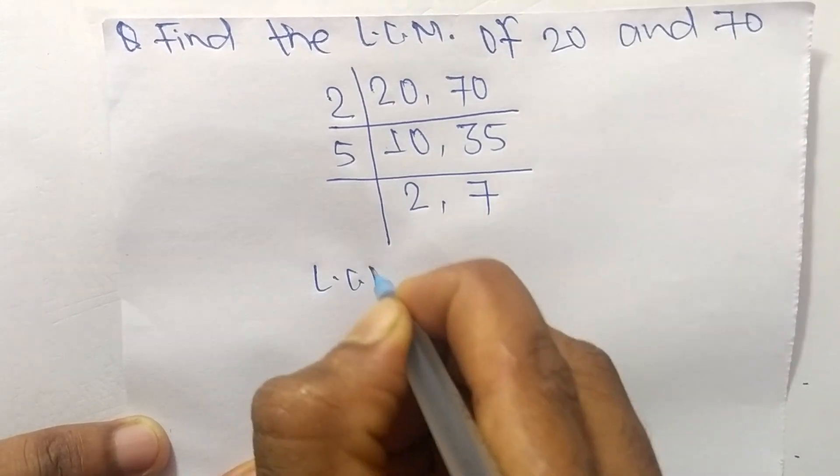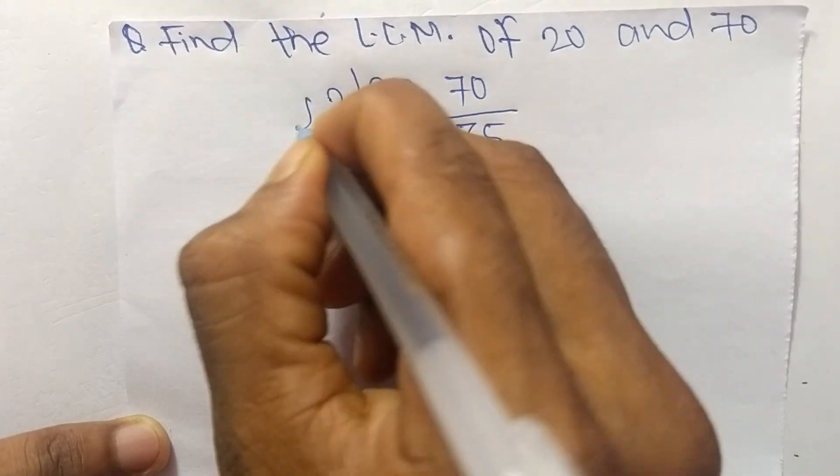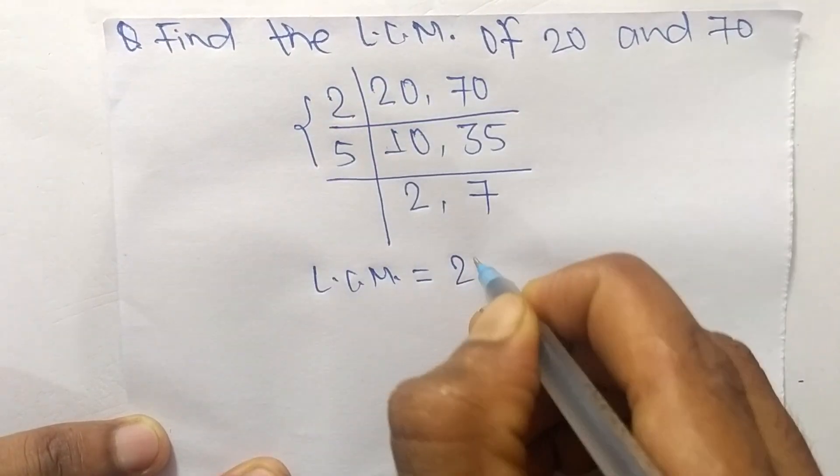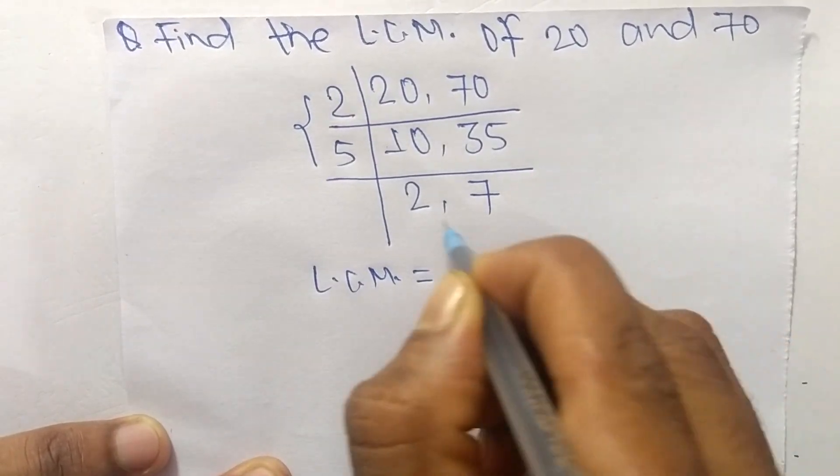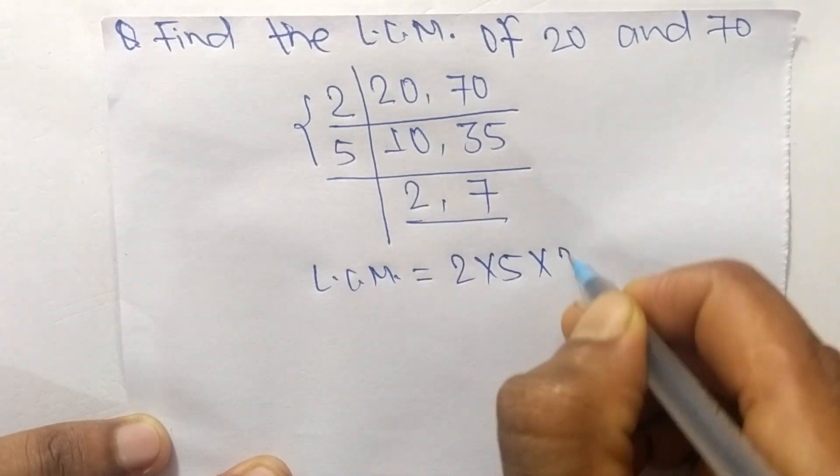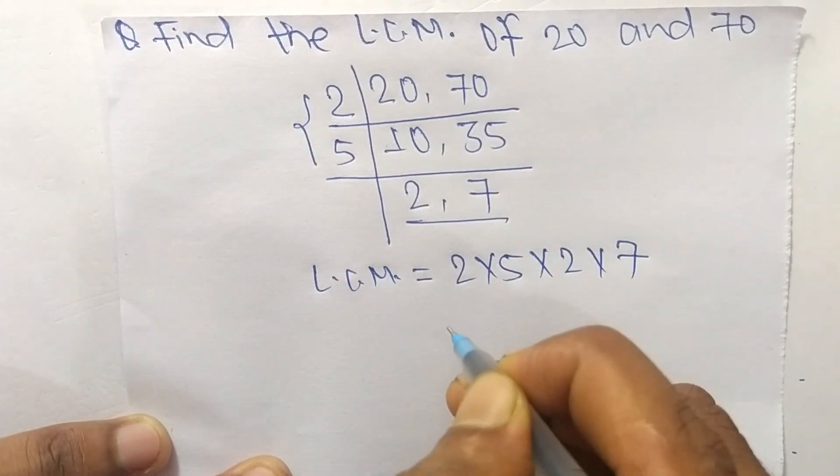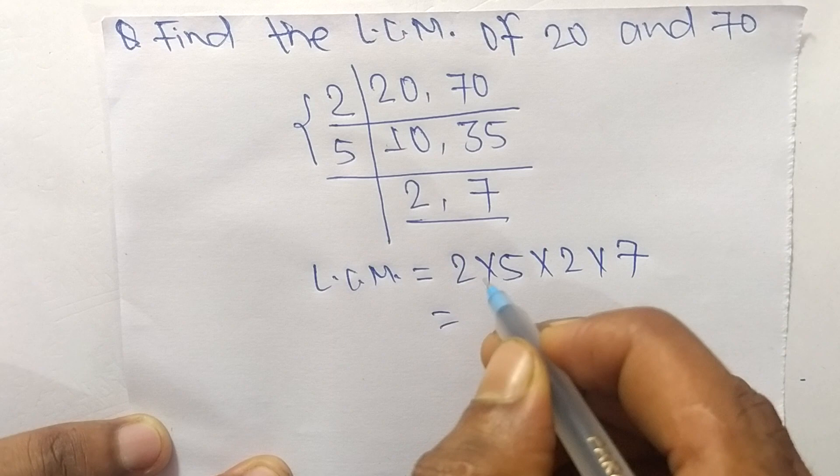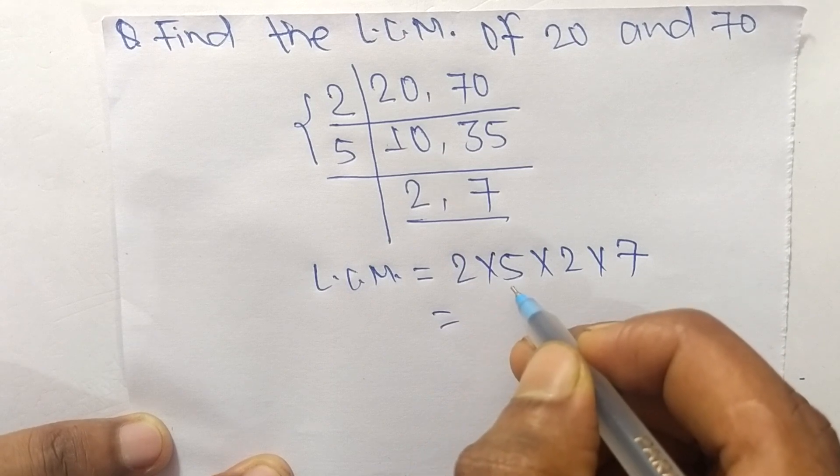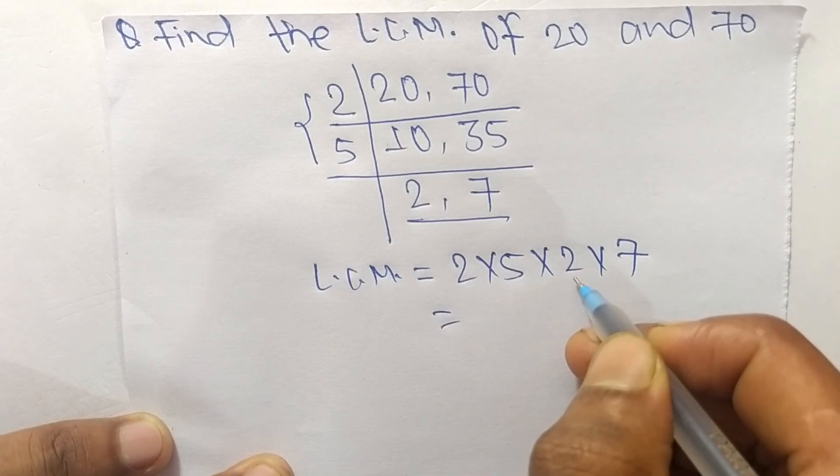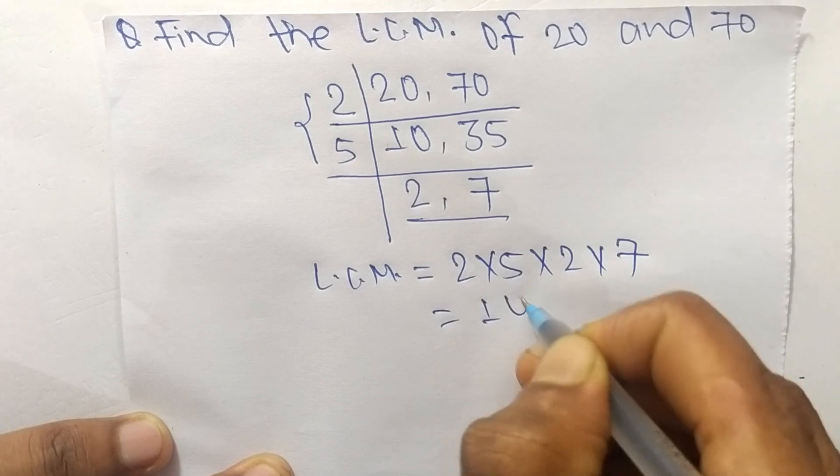So its LCM is equal to from this part 2 times 5 and from this part 2 times 7. So 2 times 5 equals 10, 10 times 2 equals 20, 20 times 7 equals